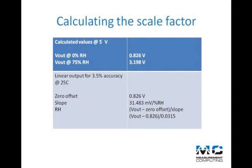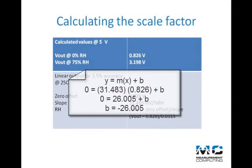Last, we need to calculate for the offset for B. We can substitute 31.483 for M, our slope, and 0.826 for X. Solving for B, we get an offset of negative 26.005.